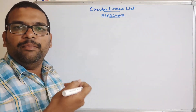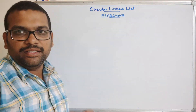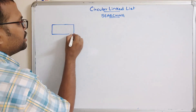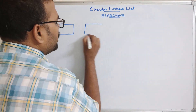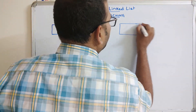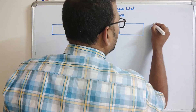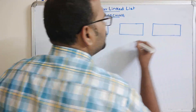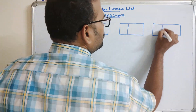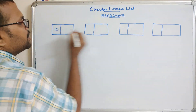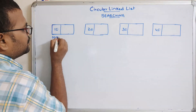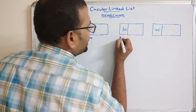Searching means to search for a given element whether it is available in the circular linked list. I am directly taking the nodes. As we discussed in previous sessions, if you draw the diagram it would be very easy to write the code. Unless you draw the diagram you need to think and imagine more, so in order to avoid that we simply draw the diagrams.